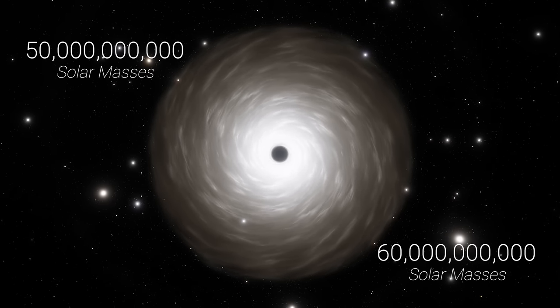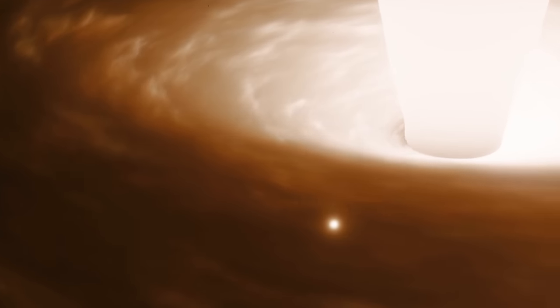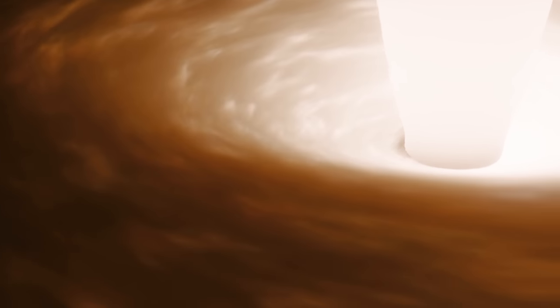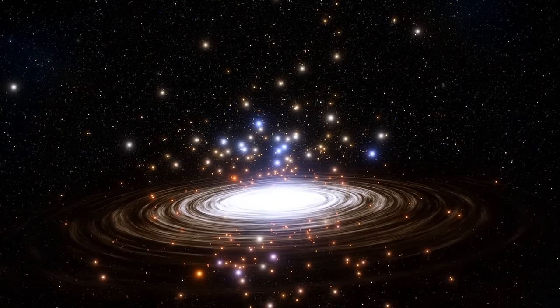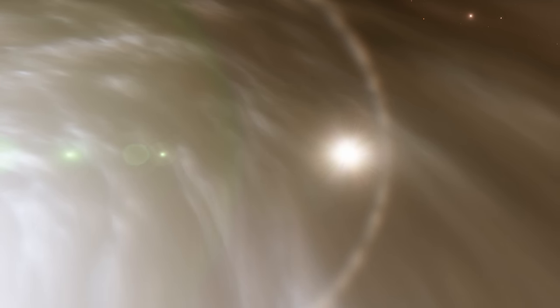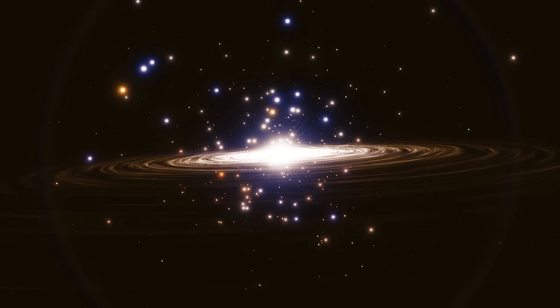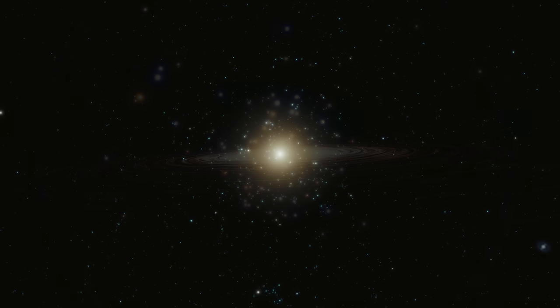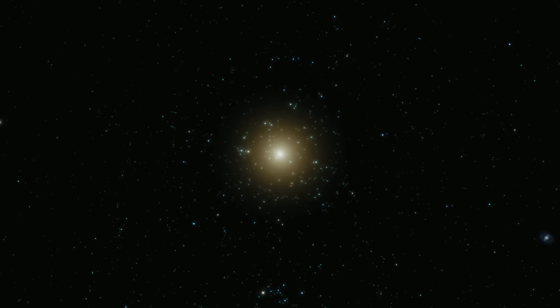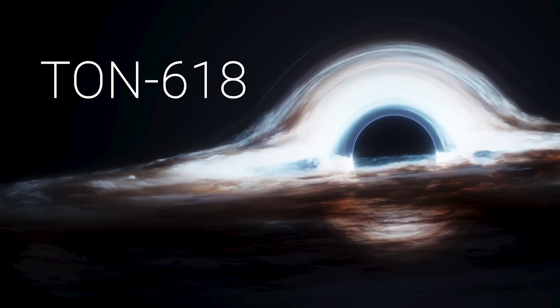Above around 50 or 60 billion solar masses, the associated disk feeding such a black hole would become so enormous that its matter would likely condense into stars, long before it reached the event horizon. The resulting radiation emitted by these stars would then severely hamper the conditions in the rest of the disk for feeding, curtailing ultra-massive black hole growth around this threshold. Thus, we weren't expecting to find a black hole larger than about 60 billion solar masses. That was, until we found TON 618.